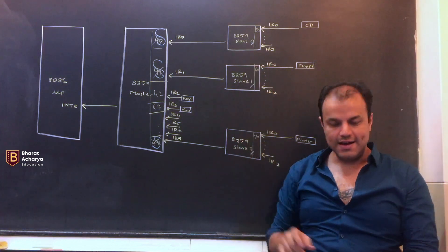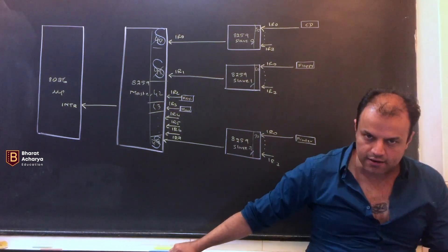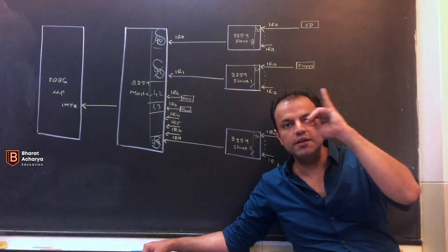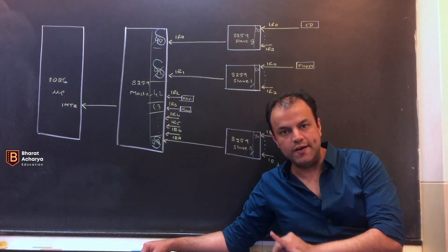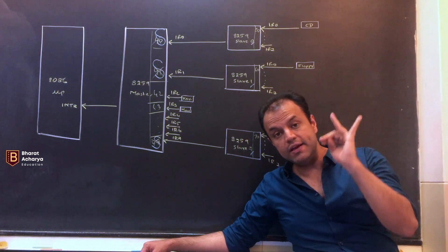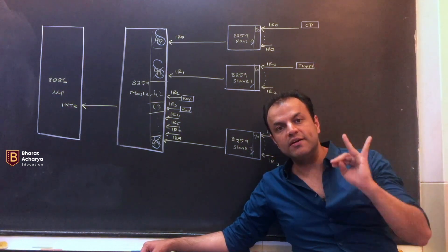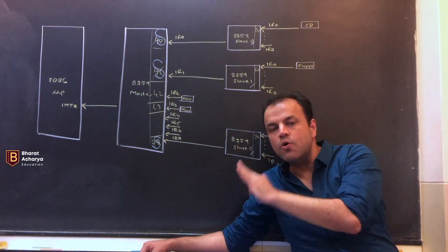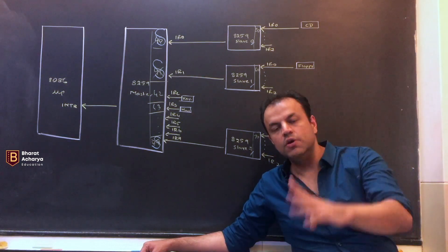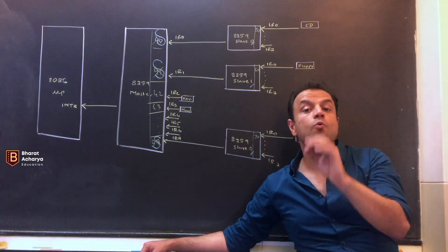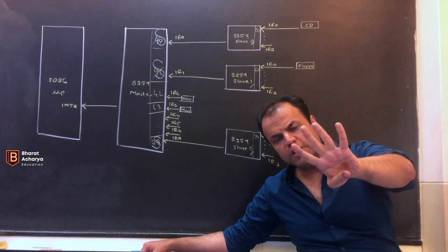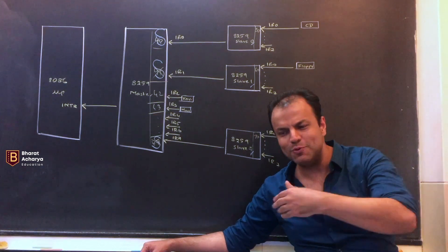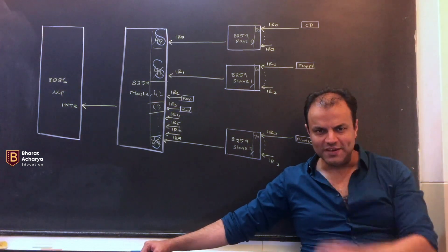You've told each slave what is their identification number. This was all initialization. Let's summarize these four points of initialization. First, you initialize every 8259. Second, you tell every 8259 what are their vector numbers - vector number of IR-0 and the remaining automatically form in a sequence. Third, you tell the master on which lines there are slaves. Fourth, you tell each slave what is its identification number. If you know these four points, working will become very easy.